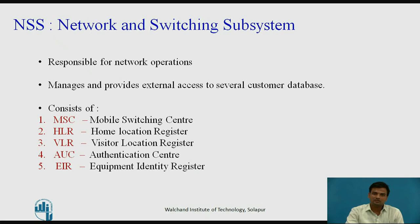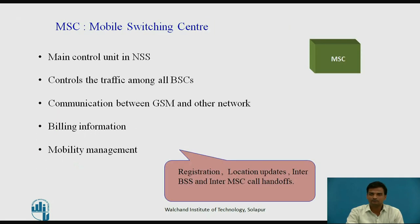The next subsystem is the NSS, i.e., Network and Switching Subsystem. The GSM system architecture contains a variety of different elements and is often termed the core network. It provides the main control and interfacing for the whole mobile network. The major elements within the core network include MSC (Mobile Switching Center), HLR (Home Location Register), VLR (Visitor Location Register), AUC (Authentication Center), and EIR (Equipment Identity Register). The main element is the Mobile Switching Center.